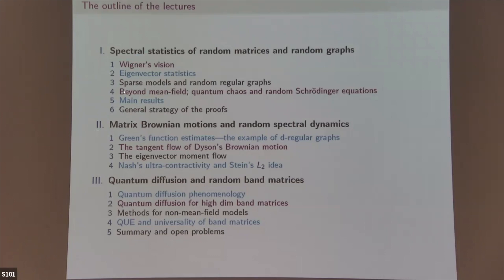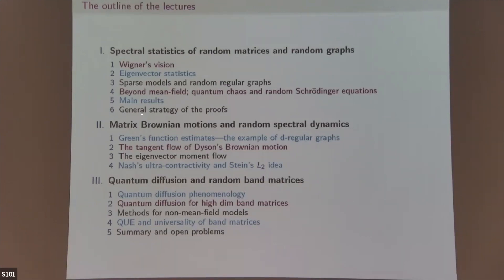I'll start by introducing Wigner's vision, the history, and eigenvector statistics. Then we'll discuss sparse models and random regular graphs. Then we'll go beyond mean field with quantum chaos and random Schrödinger equations. This sets up the province, and then the main results cover three topics. At the end I'll talk about the general strategy of the proofs.